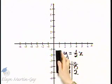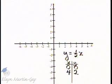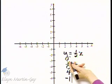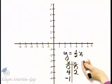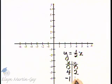And let's find a third ordered pair solution. Suppose we let x be negative one. Let's see if we can do it mentally then. y is equal to one-half times negative one. What is one-half times negative one? It is negative one-half.